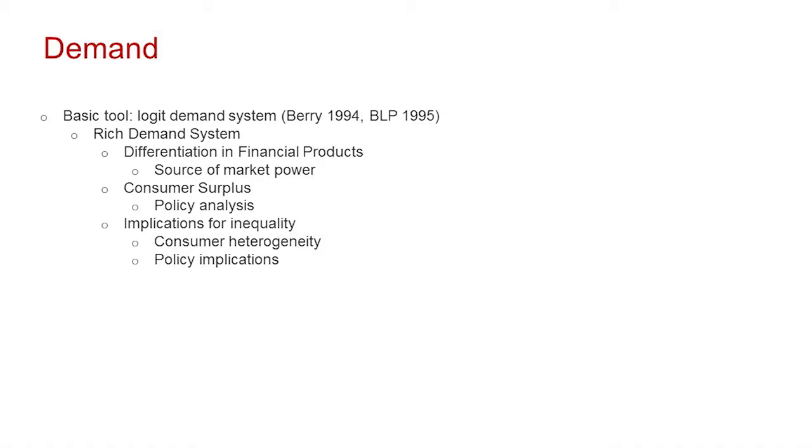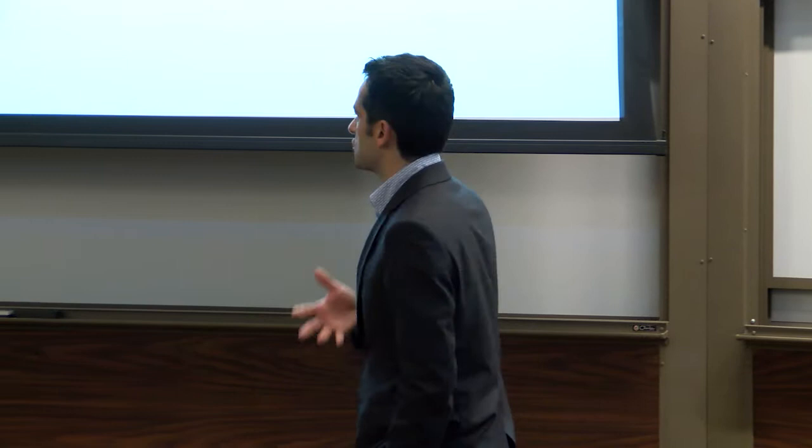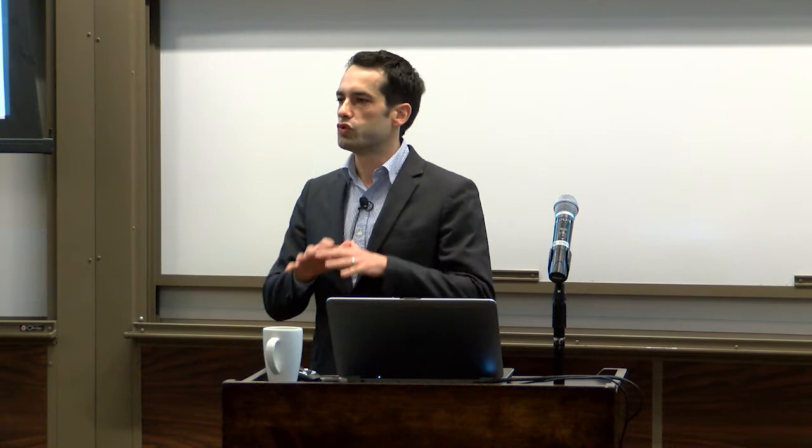Demand systems are also useful for thinking about policy. When we think about shrinking the financial system, we want to know what that does to consumers — specifically how much consumers lose or gain, and which consumers. This is especially useful for building in rich consumer heterogeneity, so we can talk about whether it's the rich or poor, or high versus low house price areas, that gain or lose. That's going to have quite rich policy implications.